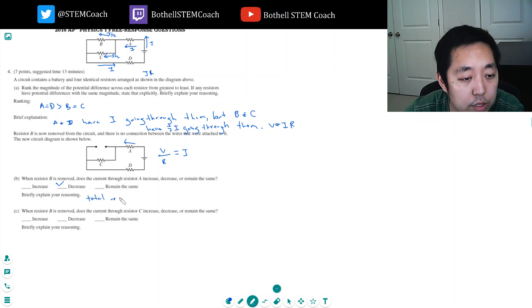Total resistance increases. And you can do this analytically if you want. The total resistance here is 3R. The total resistance here is R plus R over two plus R, which is two and one half R or five halves R, which is smaller. So the total resistance increases.